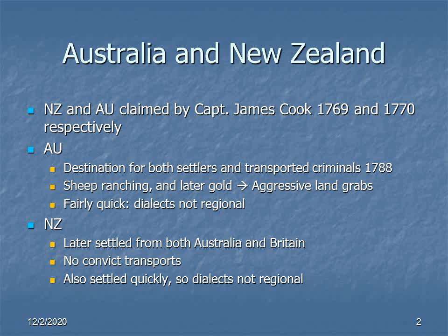As for New Zealand, it was settled from Australia and Britain, so settlement there began a little bit later than Australia itself, and was directly influenced by both Australian English and the English coming out of Britain at the time, which was the kind of English that was also going into Australia.